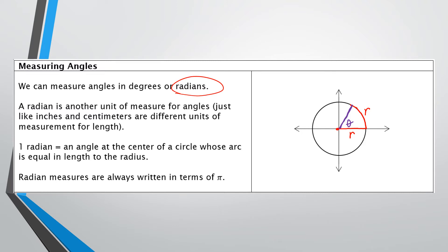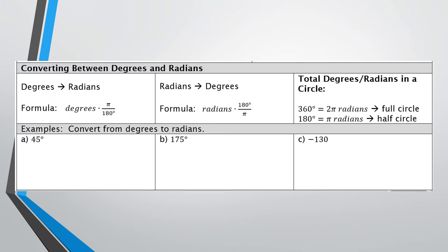Radian measures are always going to be written in terms of pi. In the next few problems, we're going to talk about how to go back and forth — how to take something in degrees and convert it into radians and vice versa. We're going to take problems already in degrees — 45 degrees, 175 degrees, and negative 130 degrees — and write those as radian measurements.